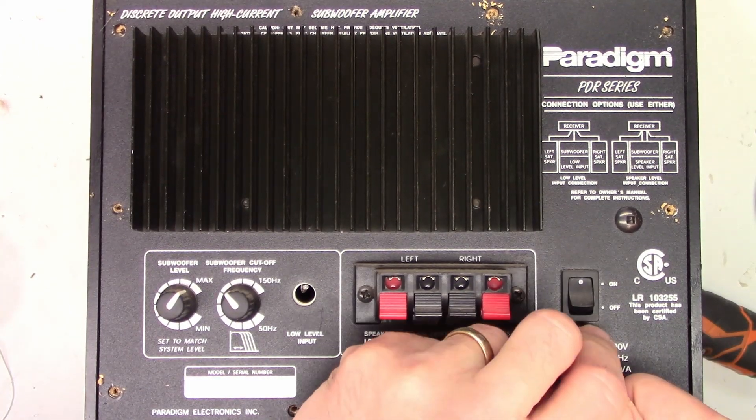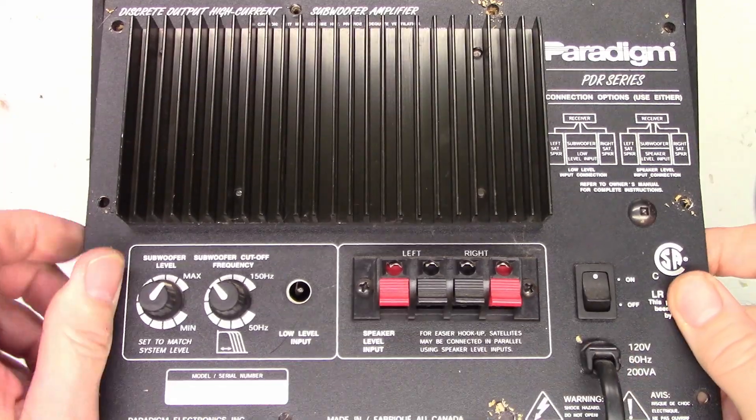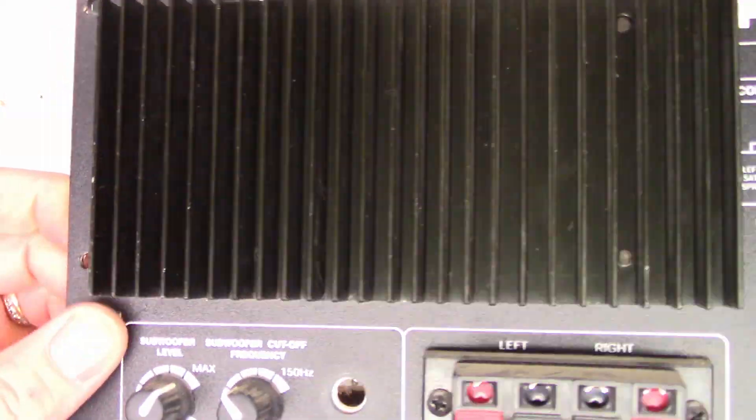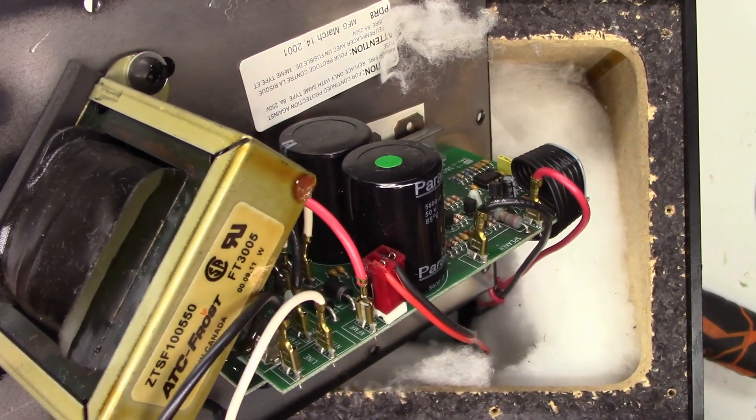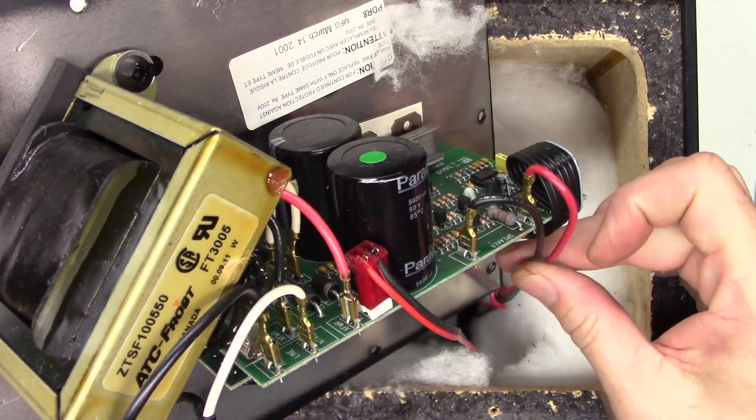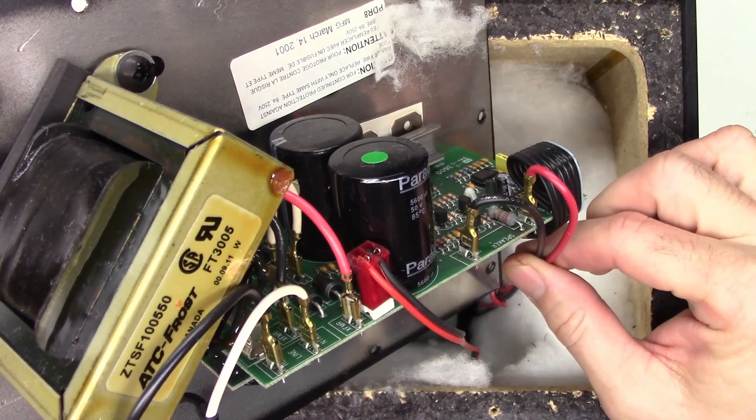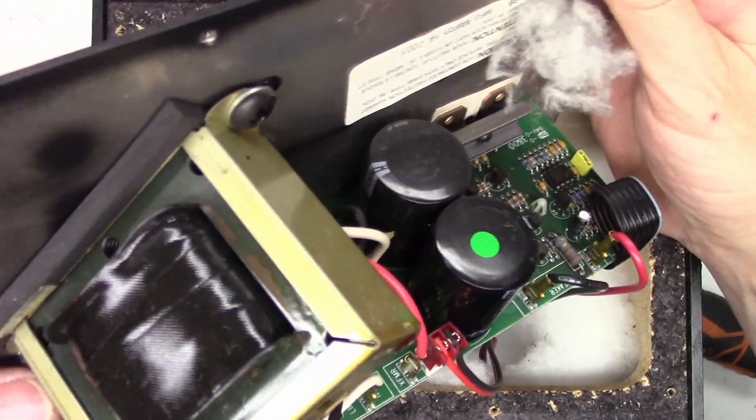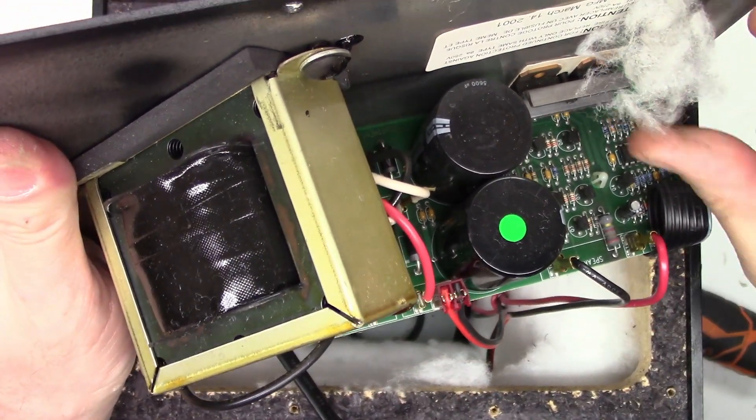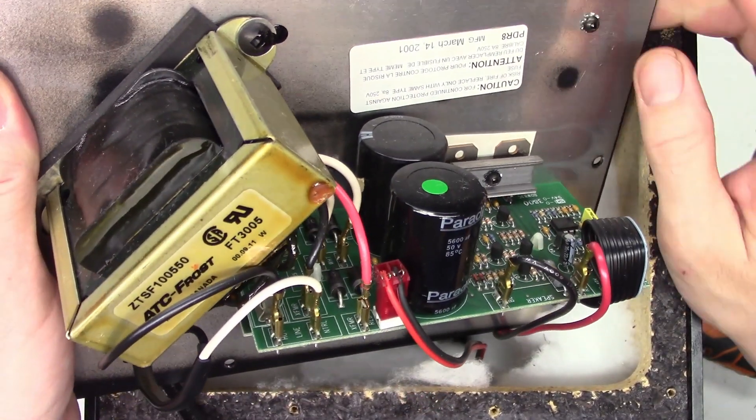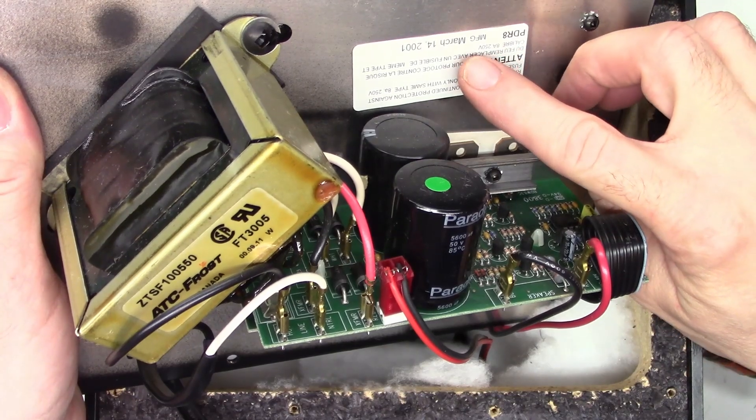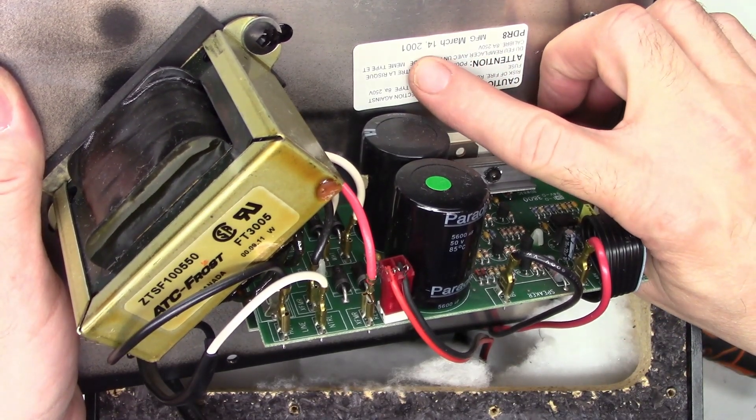All the screws are out, and the amplifier lifts off very nice and very easily. We just need to disconnect, it looks like the speaker leads and maybe another power supply lead, maybe an LED indicator in here. There we go, model number PDR8, manufactured March 14, 2001.